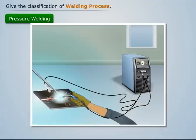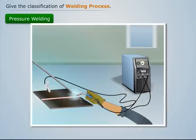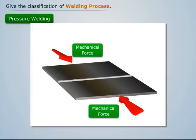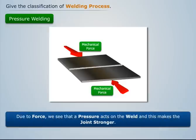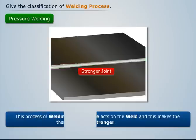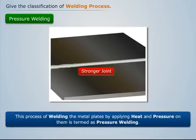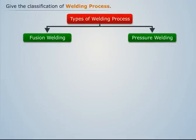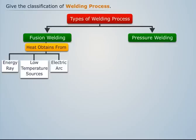Now let us understand what pressure welding is. To join these metal plates, follow the same process as in fusion welding, then at the end apply some mechanical force on the plates towards the weld joint. Due to this force, a pressure acts on the weld and makes the joint stronger. This process of welding by applying heat and pressure is termed as pressure welding, where the work pieces are welded by applying both heat and pressure.